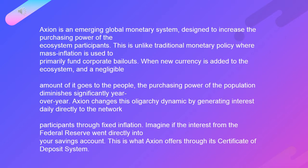The purchasing power of the population diminishes significantly year over year. Axion changes this oligarchy dynamic by generating interest daily directly to the network participants through fixed inflation.